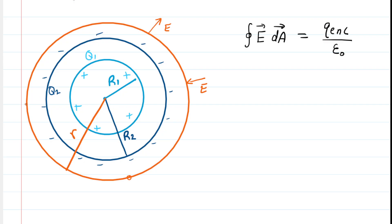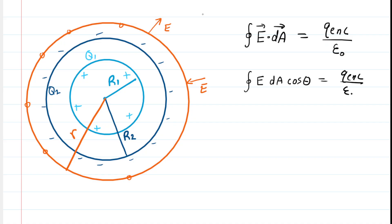The electric field is constant everywhere on our Gaussian surface because every point is at the same radial distance from the structure, and the charges are uniformly distributed on the shell or cylindrical rod. We can rewrite the dot product as the magnitude of the electric field times the magnitude of the dA vector times the cosine of an angle. Since the electric field is constant, we can factor it out.